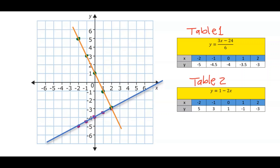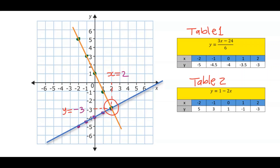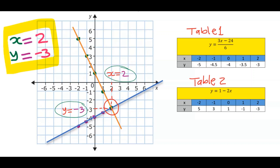Next, consider the point where the two lines meet. The two lines cross each other at this point. From that point, trace a line to the x-axis and to the y-axis respectively. On the x-axis, our answer is 2, and on the y-axis our answer is minus 3. This is the answer for the simultaneous equation.